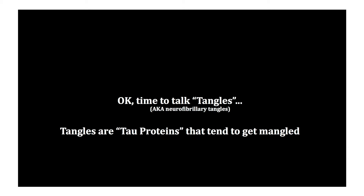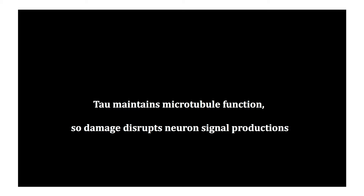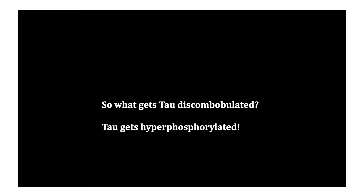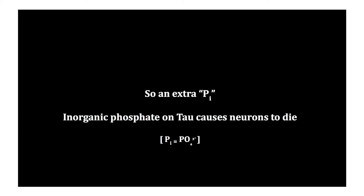Time to talk tangles. Tangles are tau proteins that tend to get mangled. Tau maintains microtubule function, so damage disrupts neuron signal production. What gets tau discombobulated? Tau gets hyperphosphorylated — an extra inorganic phosphate on tau causes neurons to die.